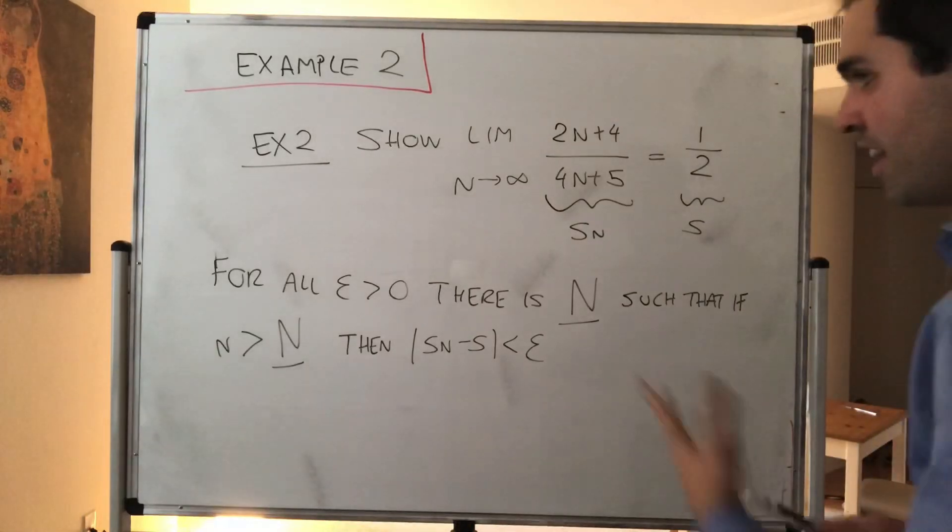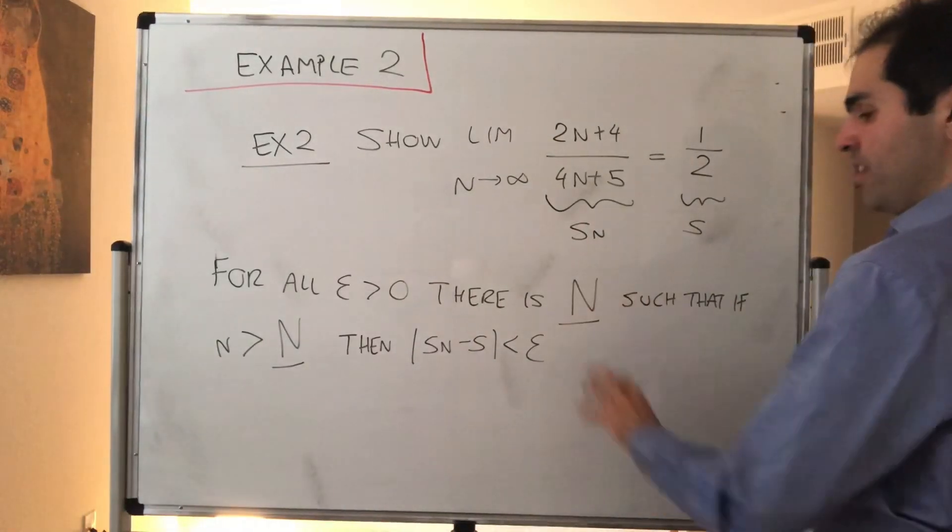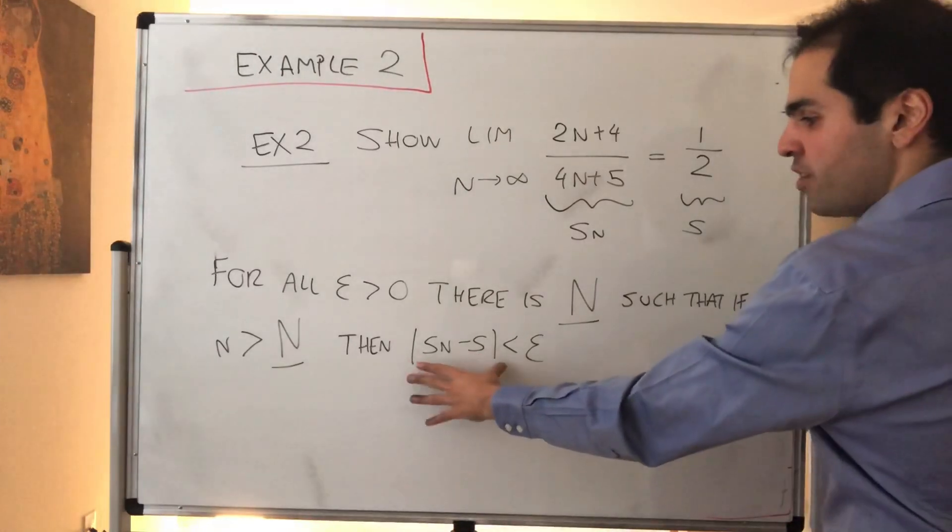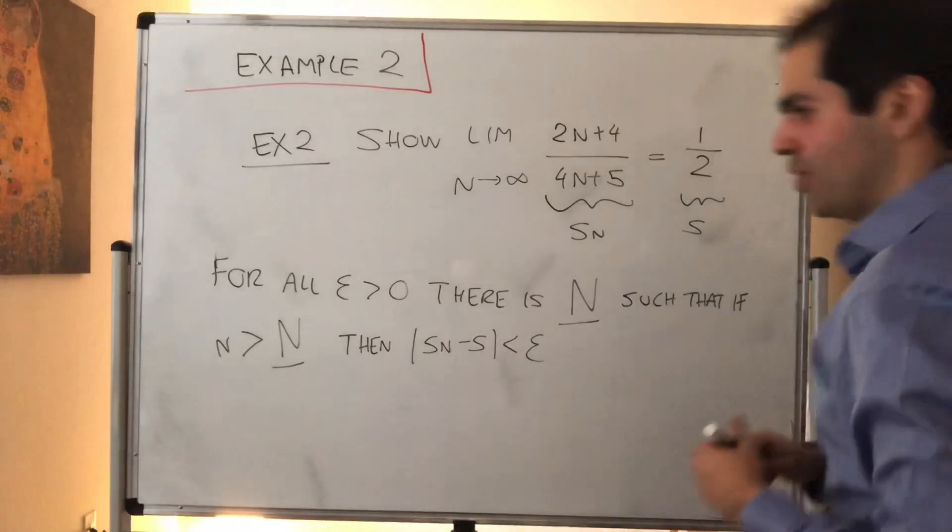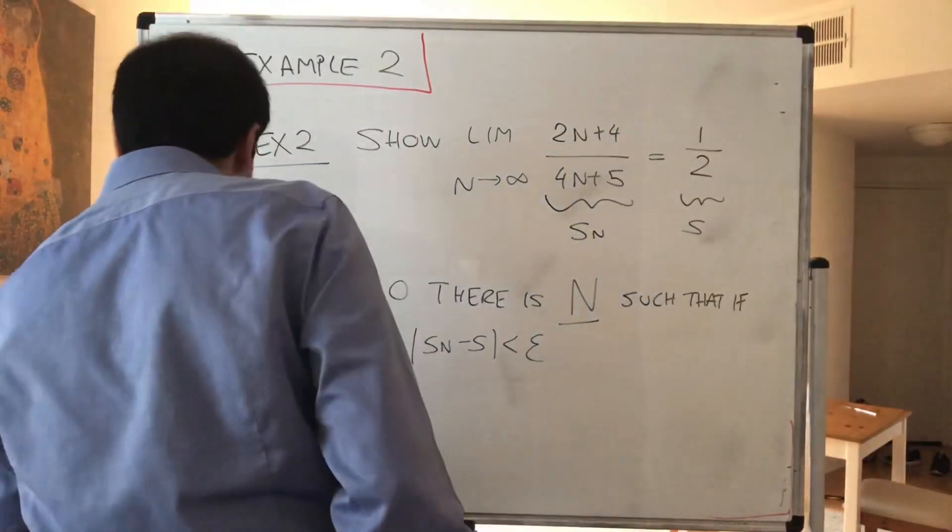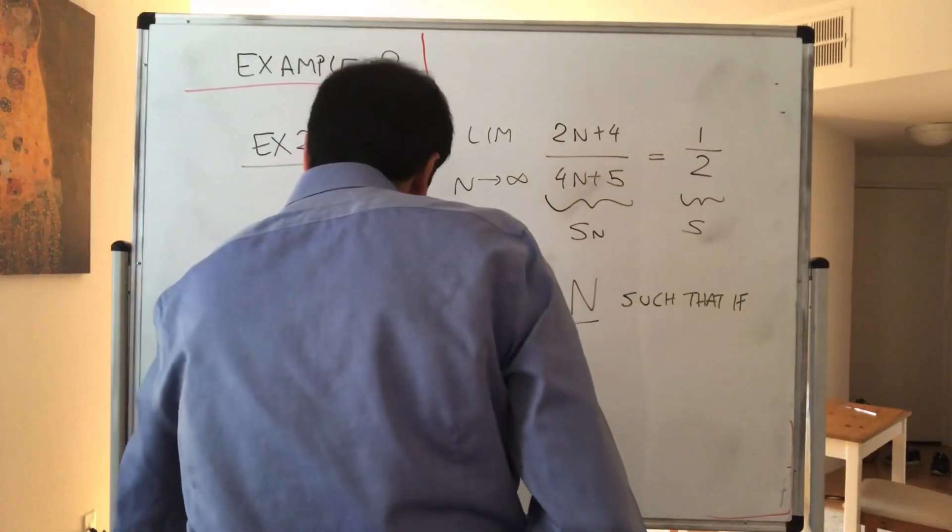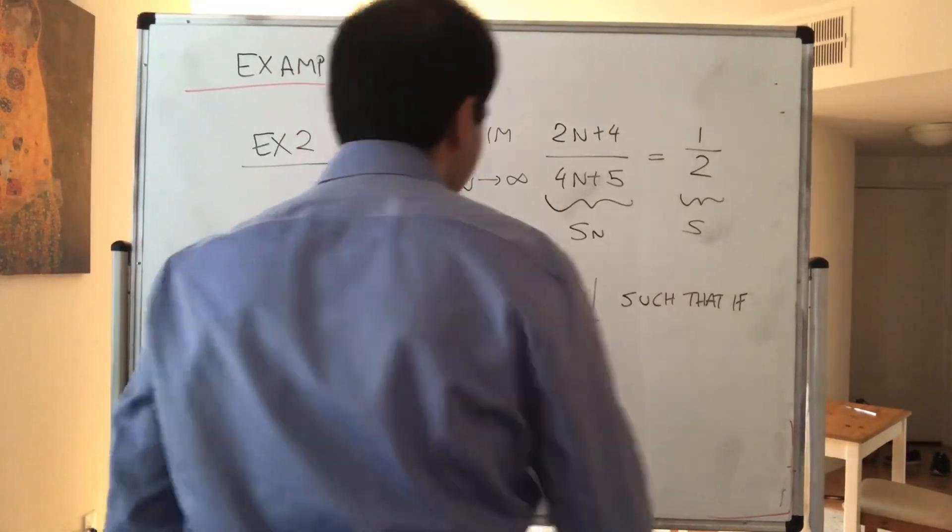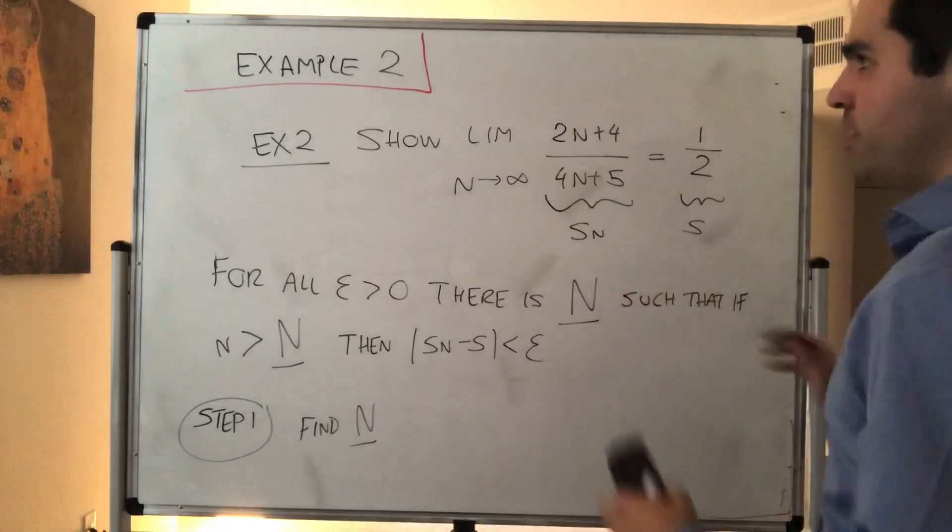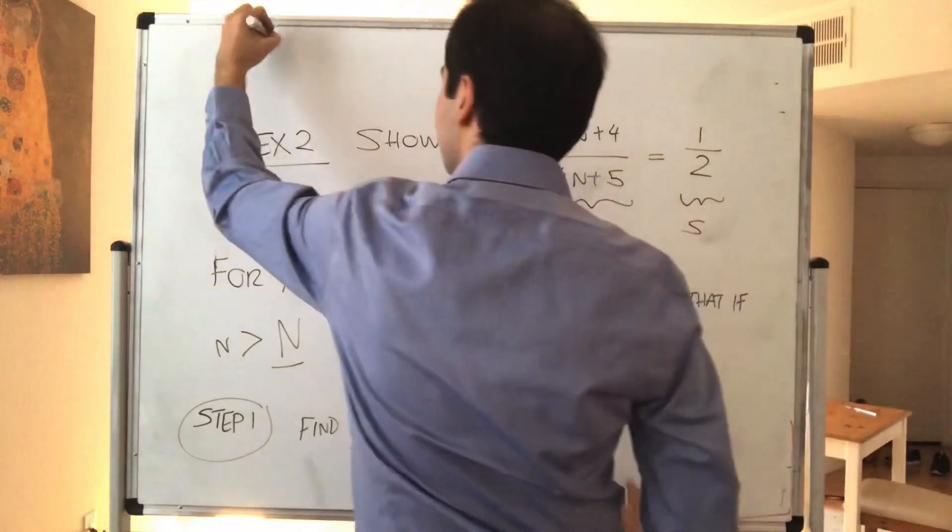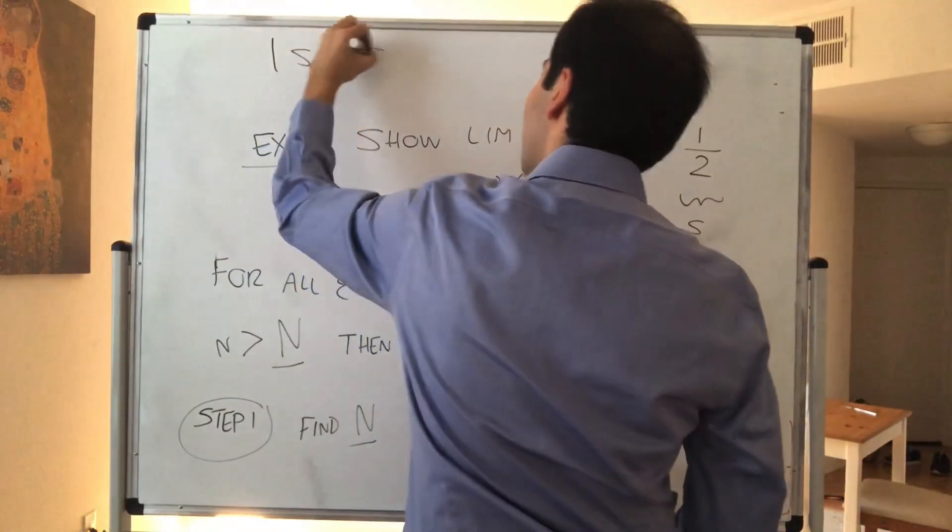then you're at most epsilon away from your desired limit. And I would like to remind you, so the first step in this is to find capital N, and you do this by solving for N in this equation. So step one, let's find N. And in particular, we have to solve for N in this equation,